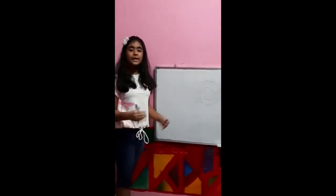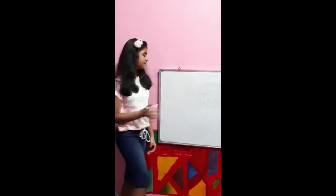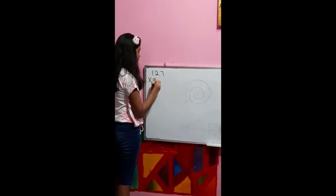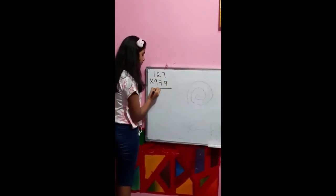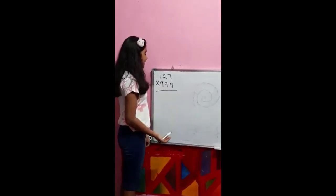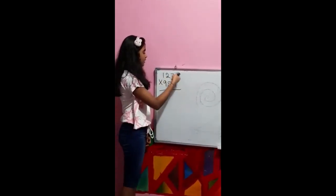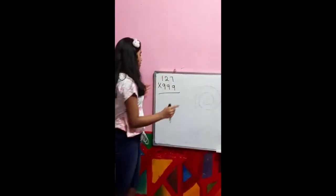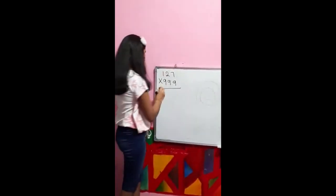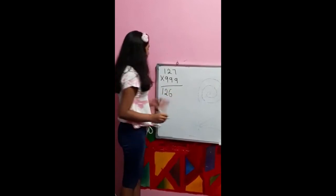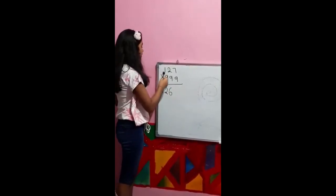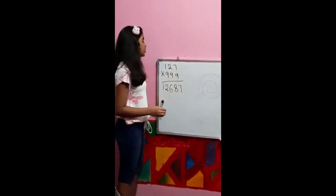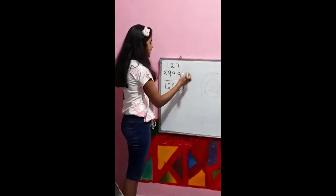Let's start with multiplying by nines. So basically what you do is, you take this side and you're going to subtract 1, just 1, from this whole number, making it 126. And this part, you will do 9 minus 1 is 8, 9 minus 2 is 7, and then finally you will do 10 for the last number — that's 10 minus 7, which is 3.